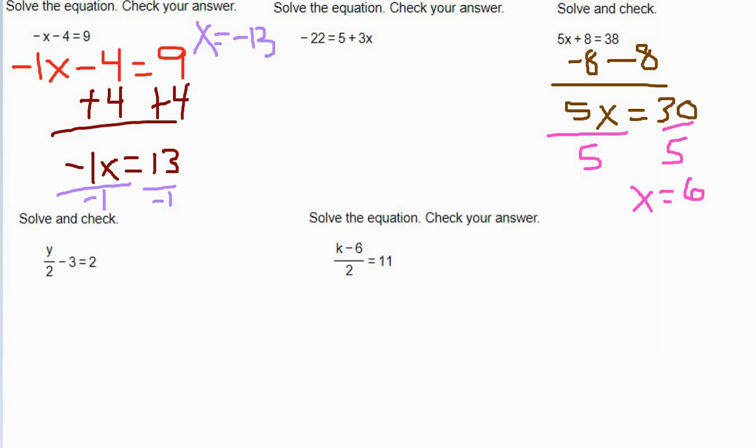This next one, we have negative 22 equals 5 plus 3x. Now we could flip this around and say 5 plus 3x equals negative 22. Some students like to do that because they like the letter on the left side. I get it. I'm not going to do that. I'm going to solve it just like it is.